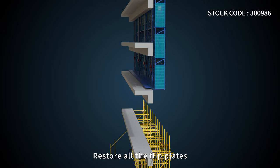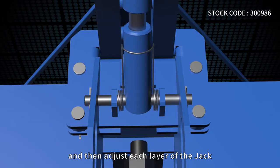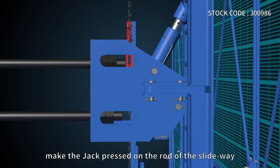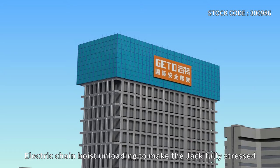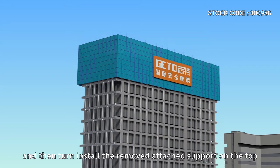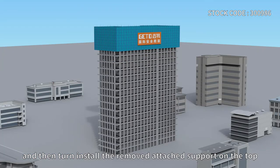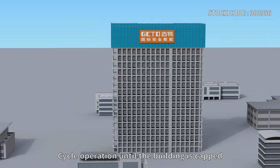Restore all flip plates, then adjust each layer of the jack. Make the jack pressed on the rod of the slide wire. Unload the electric chain hoist to make the jack fully stressed, then install the removed attached support on top. Cycle this operation until the building is capped.